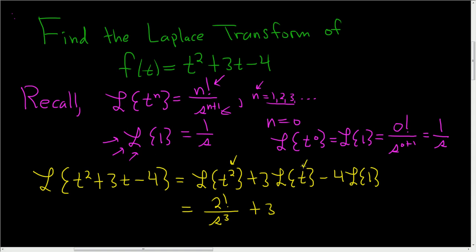Here n is equal to 1, there's a 1 here, so it's 1 factorial. And it's always 1 higher, so s squared minus 4. And we know the Laplace transform of 1 is 1 over s.